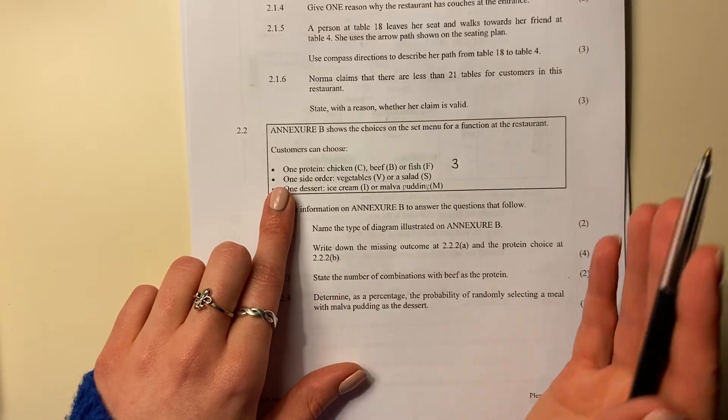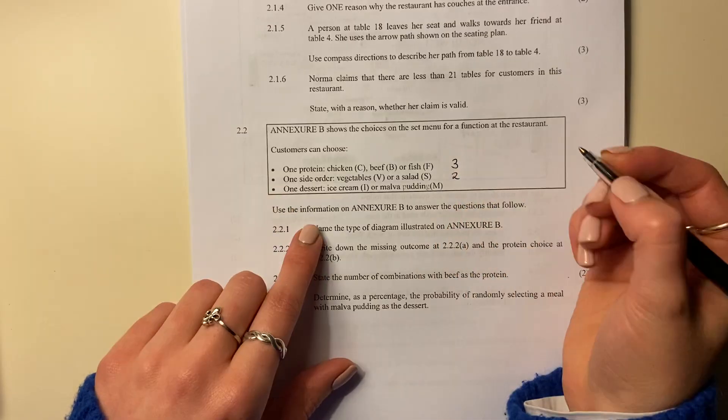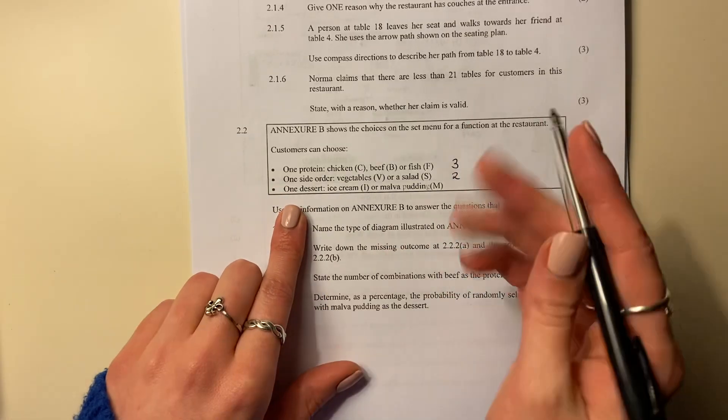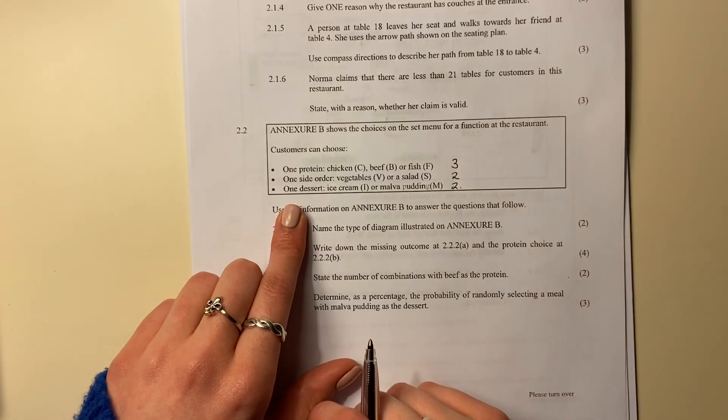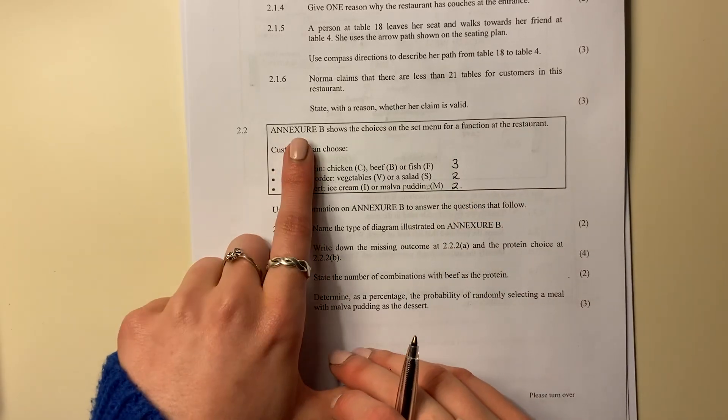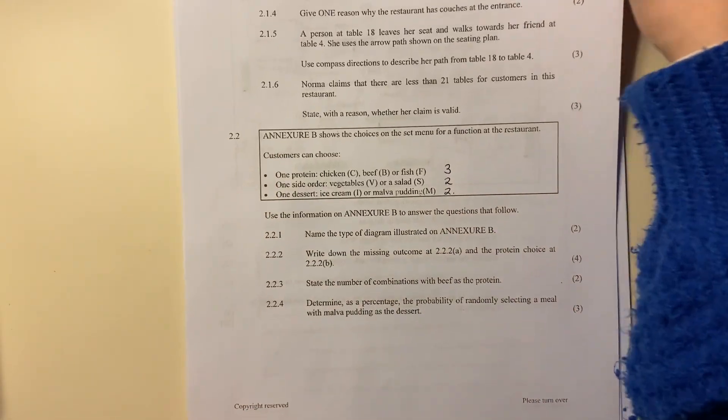One side order - vegetables or salad - that's two options, and one dessert. They can have ice cream or they can have marble pudding. Two options. It's important that you see that. It says use Annex Tip B, so go and get Annex Tip B.